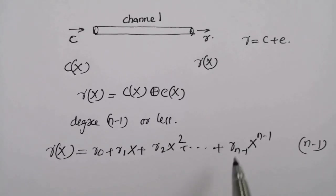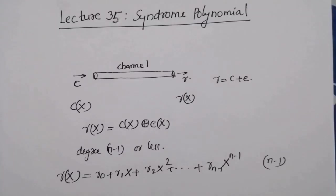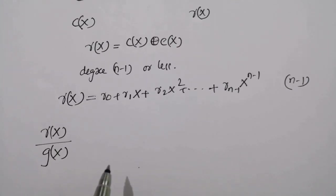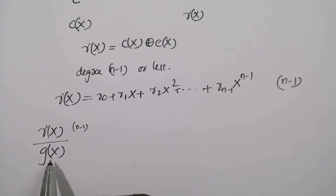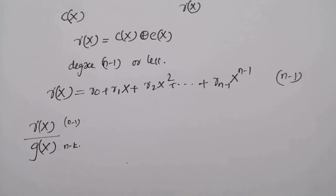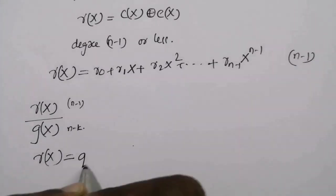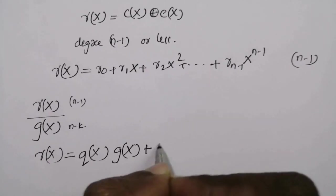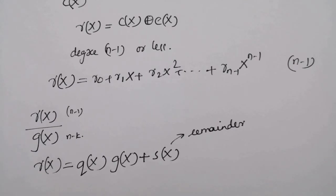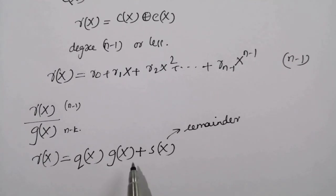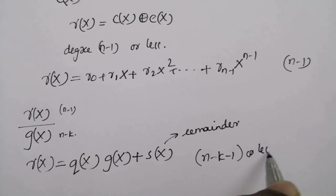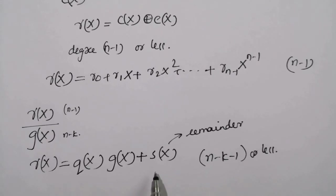This degree of n minus one occurs only if the coefficient r_{n-1} equals one. Now divide r(x) by the generator polynomial g(x). We know that r(x) has degree n minus one, and g(x) has degree n minus k. Let q(x) be the quotient and s(x) be the remainder. So we can write r(x) equal to q(x)·g(x) plus s(x). Since we divided r(x) by g(x) of degree n minus k, the remainder s(x) will be a polynomial of degree n minus k minus one or less. Here s(x) is called the syndrome polynomial.